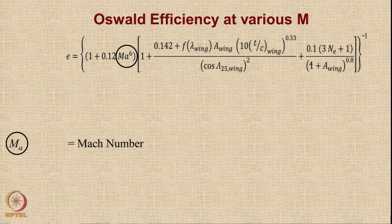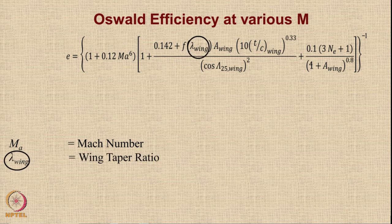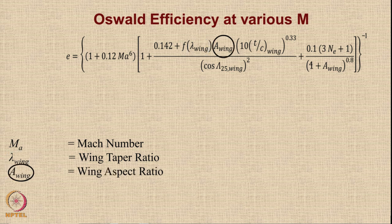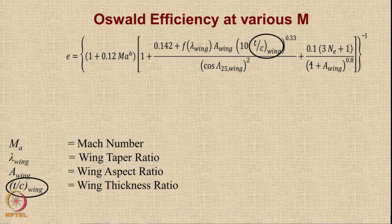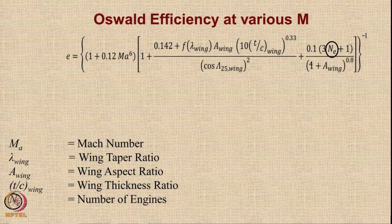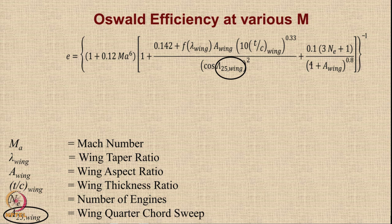The formula requires the Mach number Ma, because the value of E depends upon the sixth power of Mach number. The next parameter is the taper ratio, from which you calculate a function called F-lambda-wing. You also need the wing aspect ratio, the T/C wing expressed as a decimal (not percentage), the number of engines NE, and lambda-25-wing, the quarter-chord wing sweep. All these parameters are needed to estimate the Oswald efficiency.